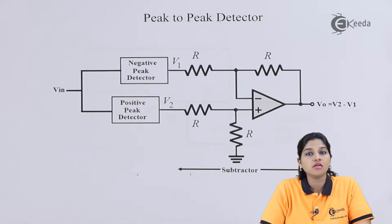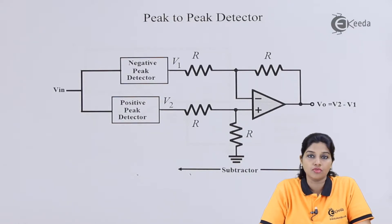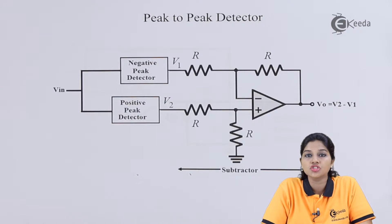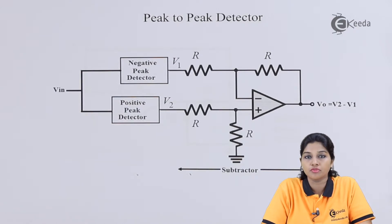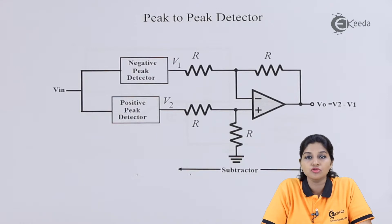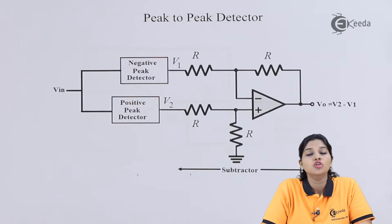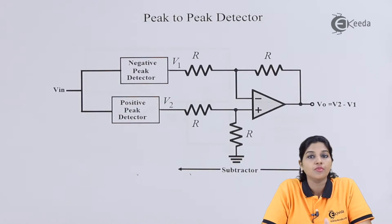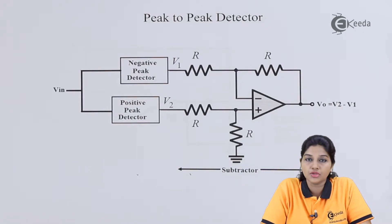We know that a rectifier is a circuit which provides the average value of the input signal as output. But in some applications, we require only the peak values of the input signal, so in that case a peak detector circuit is used. In any signal, there are two types of peak values: positive peak value and negative peak value. Based on that, there are two types of peak detectors: positive peak detector and negative peak detector.